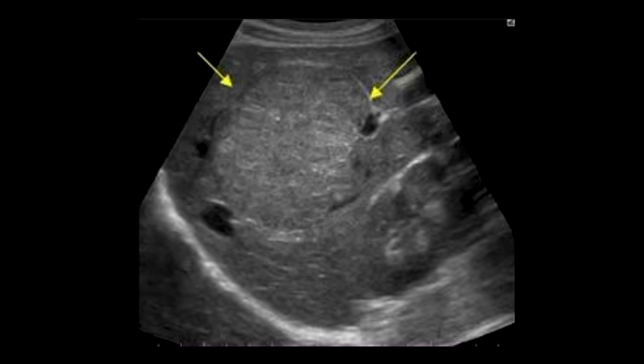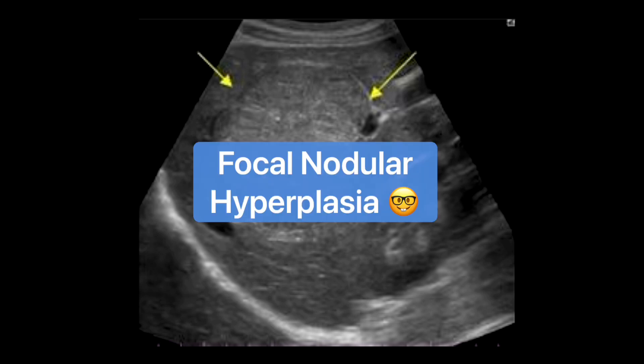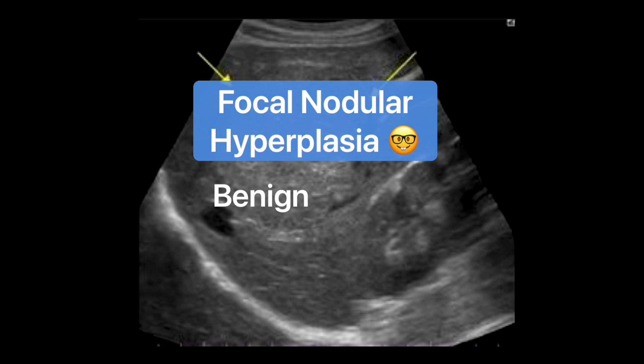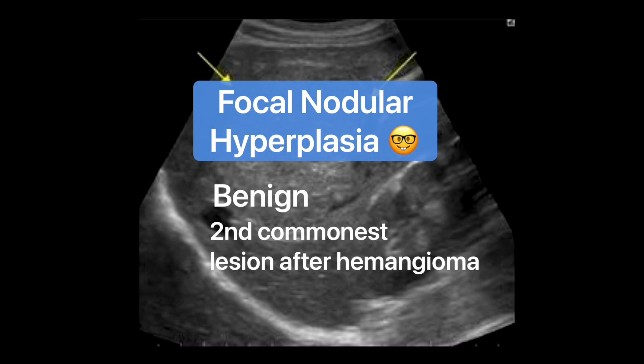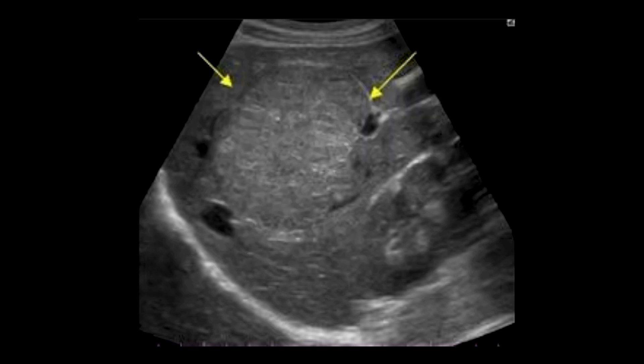This, however, is a focal nodular hyperplasia or FNH, which is a benign lesion. It's the second most common benign lesion of the liver, only secondary to hemangioma. Now a lesion like this would need further characterization with MRI with hepatocyte-specific agents to further characterize the lesion as an FNH versus some type of malignant tumor.